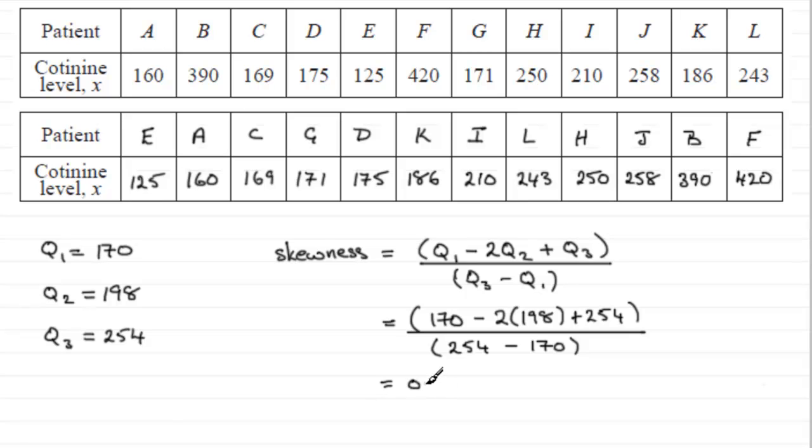Or as a decimal, 0.3 recurring. So just put a dot over the top of that three. So what does this tell us? Well, it tells us that we've got positive skew, because our value is positive.